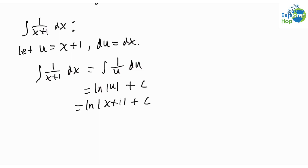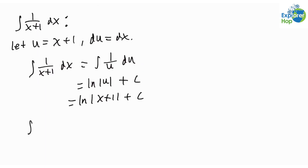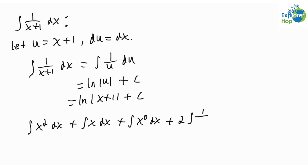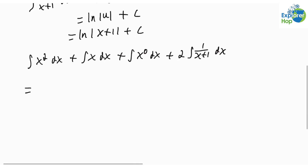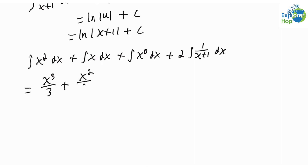Now, putting everything together and applying the reverse power rule to find the antiderivative of the other terms, we get that the integral of x squared dx plus the integral of x plus the integral of x to the 0, plus 2 times the integral of 1 over x plus 1 dx, is equal to x cubed over 3 plus x squared over 2 plus x plus 2 times ln of the absolute value of x plus 1, then plus some constant c.